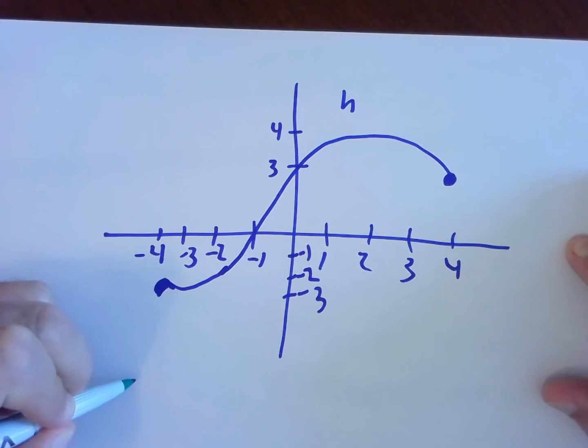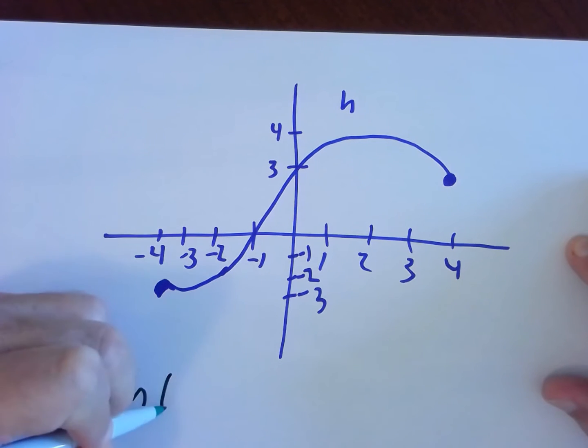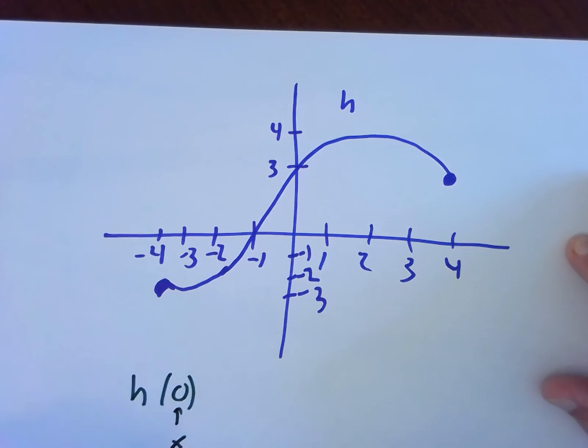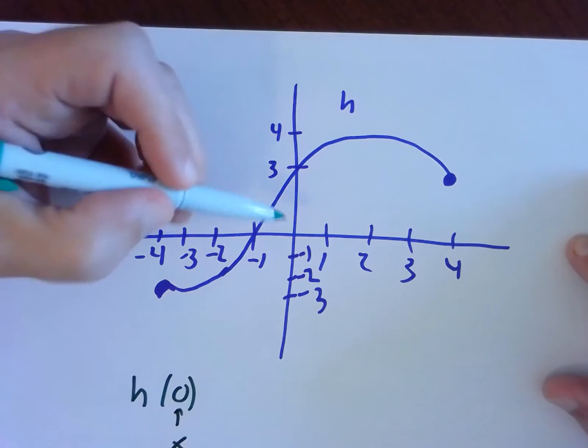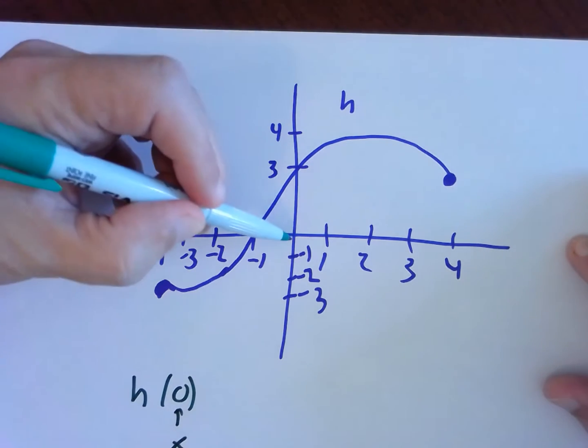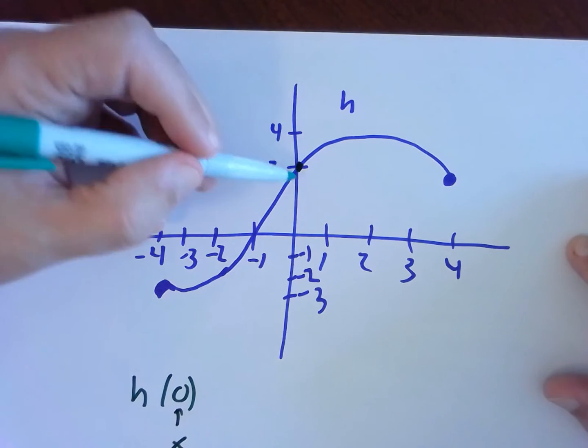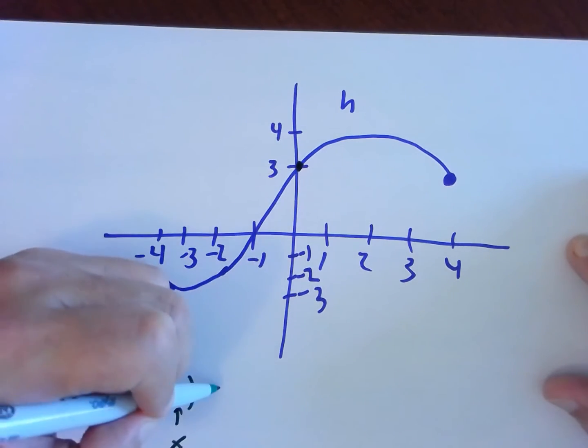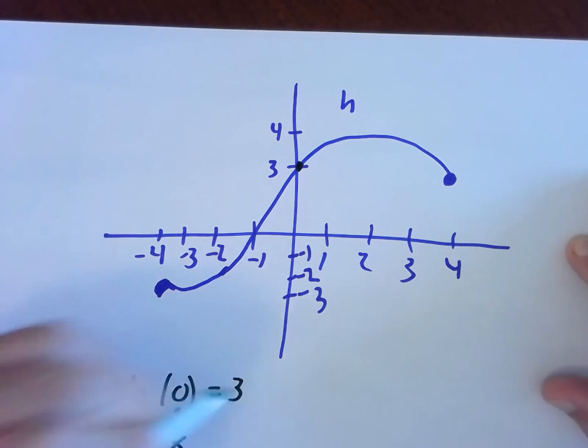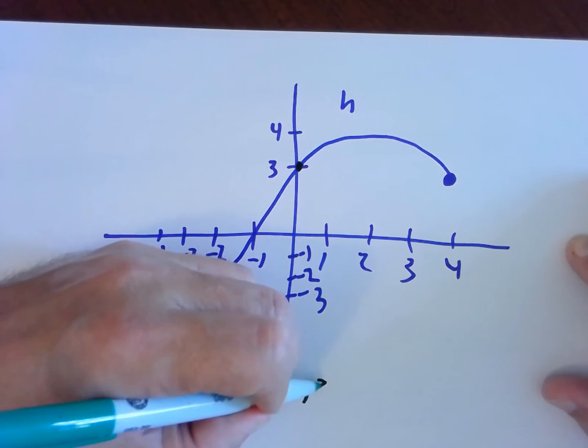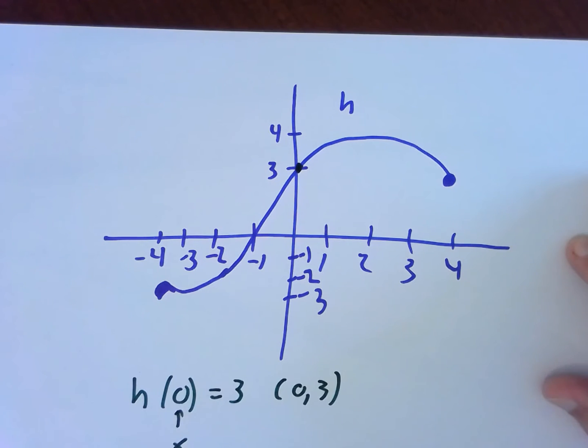So somebody might say, hey, I want you to tell me h of 0. That means when x equals 0—remember, inside is always an x—find the corresponding y value. So I look here on the graph. When x equals 0, we're talking about this point right here. What's that y value? It's 3. So the point 0, 3 is one of the points on the graph. When x equals 0, y equals 3.